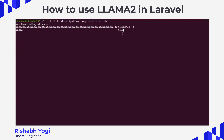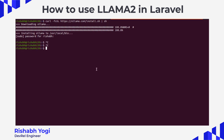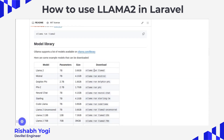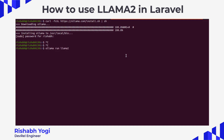I'm copying this command and running it in the terminal. Ollama is starting to download. You need to enter your system credentials. After Ollama is installed, run the command 'ollama run llama2' to download Llama2. You can then enter a message like 'Hello, what is Laravel Bagisto?'